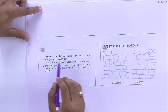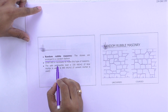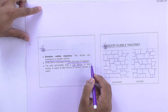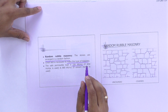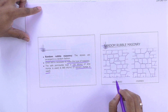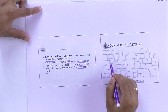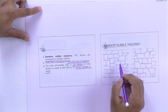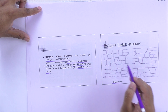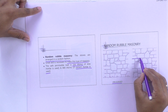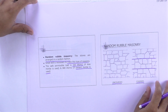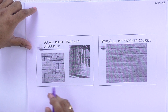In coarse rubble masonry we have certain course layers, but in uncoarsed rubble masonry there are no course layers. The third type is random rubble masonry — stones are arranged in random fashion and great skill is necessary. The safe permissible load is 330 kN/m² with lime mortar and 880 kN/m² with cement mortar. In the image you can see uncoarsed rubble masonry showing different types of stones with no uniformity, while in the coarse one, layers are visible.